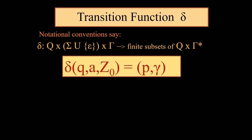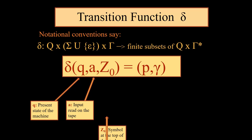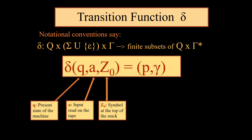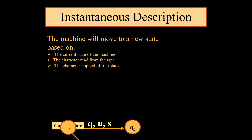The transition function delta represented by q, a, z0 leads to p, alpha. Here q is the present state of the machine, a is the input on the tape, z0 is the symbol on top of the stack, p is the new state of the machine, and alpha is the string of stack symbols.